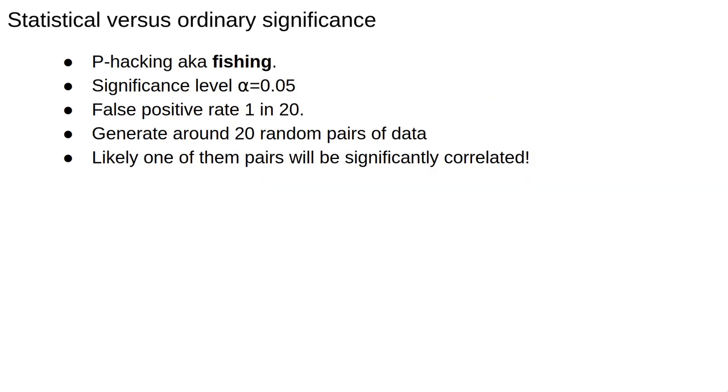The second case, p-hacking, is also known as fishing, and we discussed it a little in one of our previous videos. Say we accept that alpha equals 0.05 is sufficient for a truly significant result. All we have to do then is generate about 20 random pairs of data, and chances are that one of them will be significantly correlated and we can write a paper.